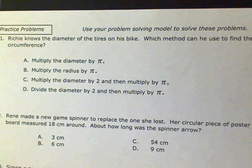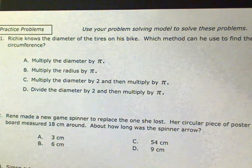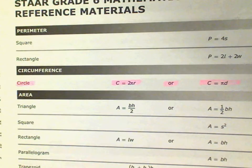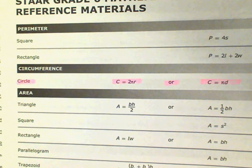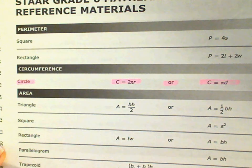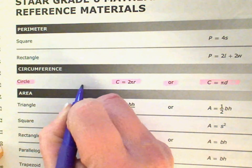In this video, we are going to focus more on our formulas to find the circumference, the radius, or the diameter of circles. You're going to need out your star reference material, because under circumference of a circle, they give you two options: C equals 2 pi R, or C equals pi D.